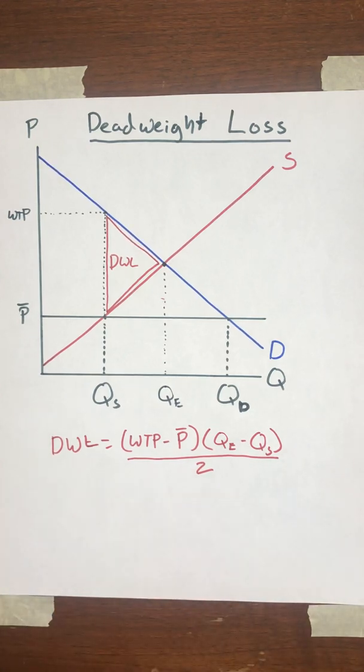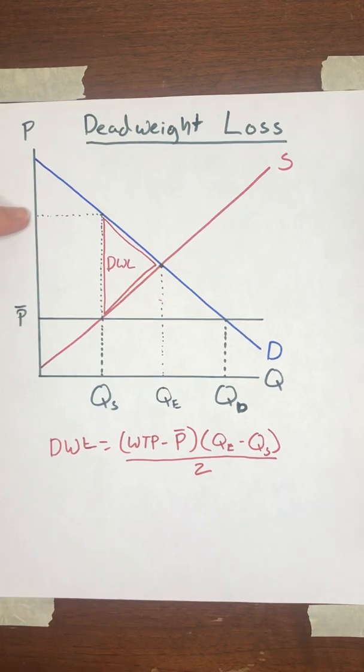And that's it for deadweight losses. And that brings us to the end of the material for price ceilings. Tomorrow, I will start putting together some videos on price floors. Those should be quicker than these because price floors are just going on the opposite side of equilibrium. And so almost all of the effects are just going to be exactly the reverse of what they have been in the lectures on price ceilings. So anyway, I will talk to you guys later. Remember to be flexible, communicate, and stay awesome.